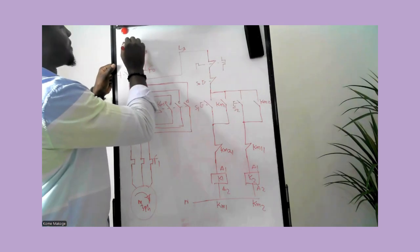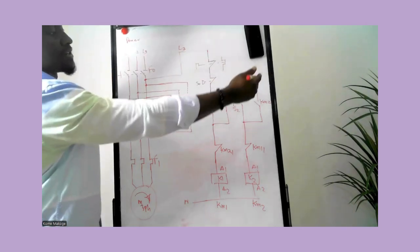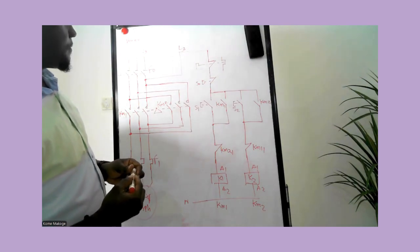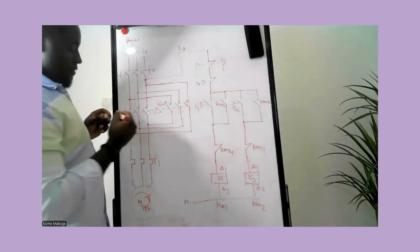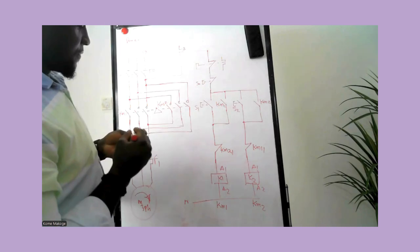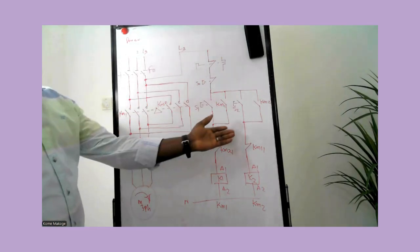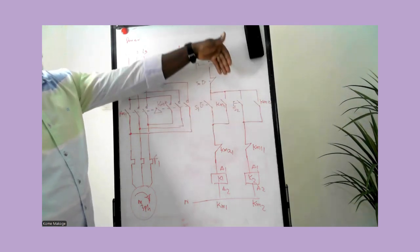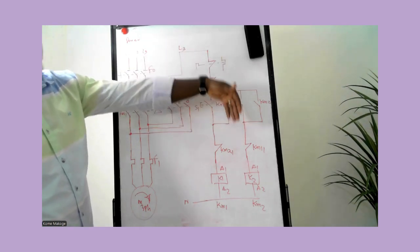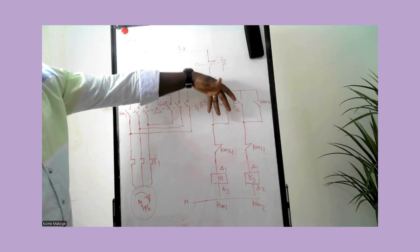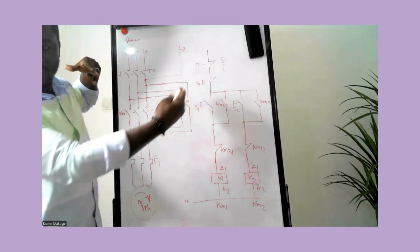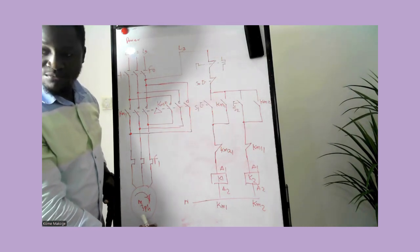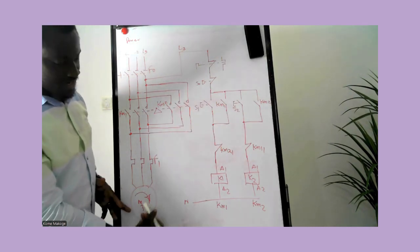On the left is the power circuit and on the right hand side is the control circuit. What we will be doing now is explaining how the control circuit functions, and while explaining we'll be seeing how current will be flowing to the power circuit and getting to the point of the electric motor to see how the motor will be rotating.